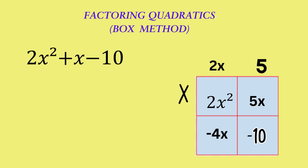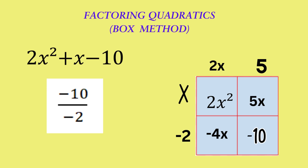Now let's go to the second row, where we have negative 4x minus 10. Their highest common factor is negative 2, since the row begins with a negative term. If we divide minus 4x by minus 2, we get 2x. And if we divide minus 10 by minus 2, we get 5. The same numbers we already have at the top — as they should be.